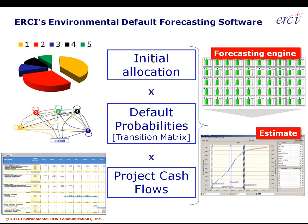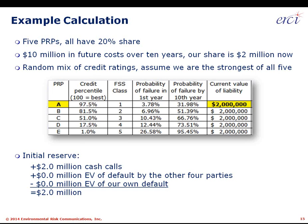Starting with the initial calculation: we put in the Markov chain data, apply the project cash flows — those are our three inputs — and put that information into our forecasting engine to generate our estimate. Here's our case study: five PRPs paying into a cleanup project, each with an equal 20% share, with $10 million in future costs over the next 10 years — so $200K per party per year, or $1 million for the whole group per year.